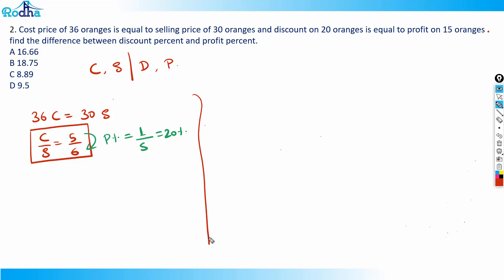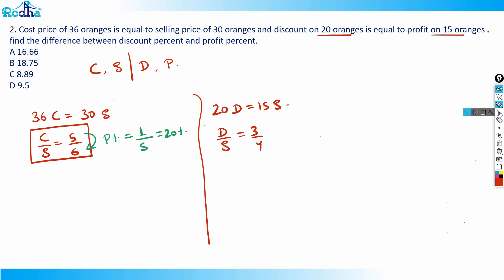Now the second equation: discount on 20 oranges is equal to profit on 15 oranges. So 20d = 15p, which gives d/p = 3/4.